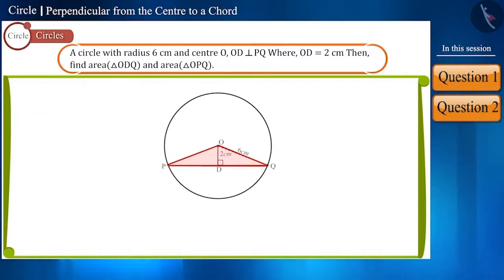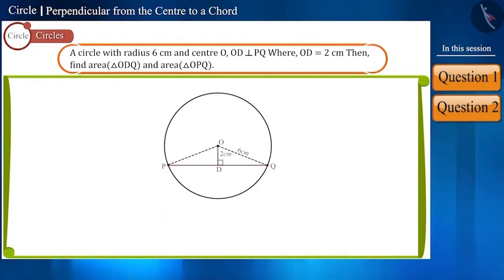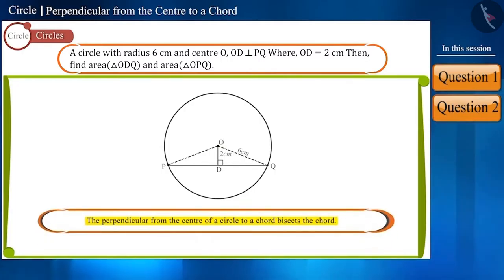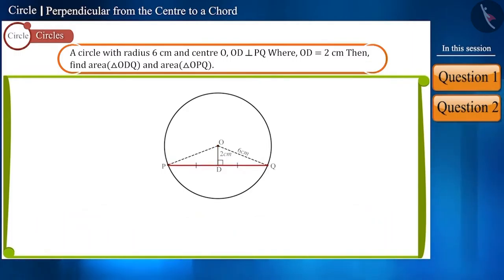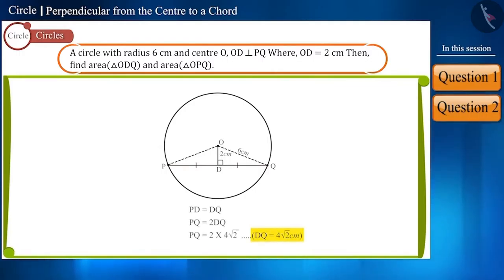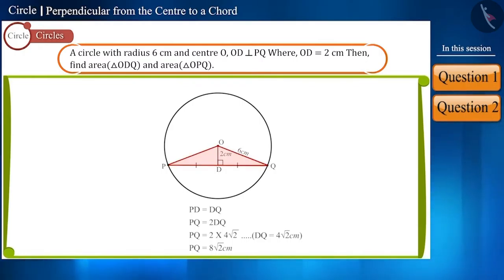Now we have to find the area of triangle OPQ. Since OD is perpendicular to chord PQ and O is the center of the circle, a perpendicular drawn from the center of a circle to a chord bisects the chord. Therefore, PD is equal to DQ, and PQ equals 2 times DQ. We found DQ as 4 square root of 2 cm, so chord PQ will be 8 square root of 2 cm. Now find the area of triangle OPQ yourself.